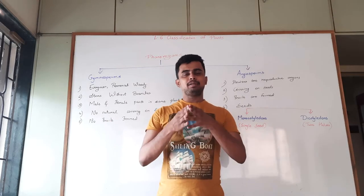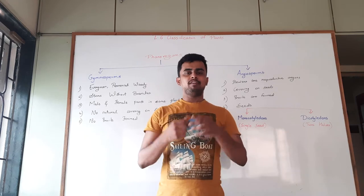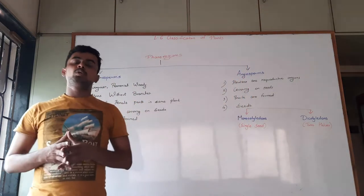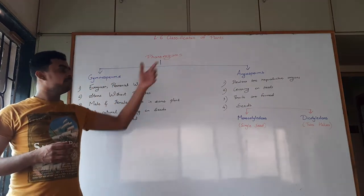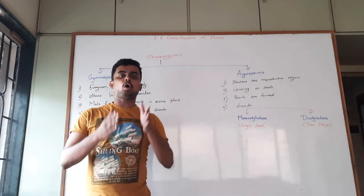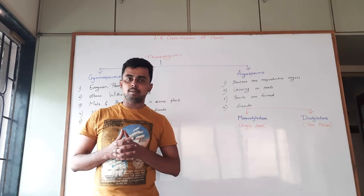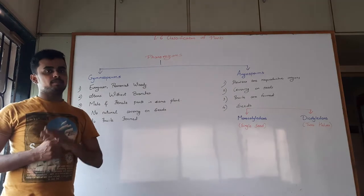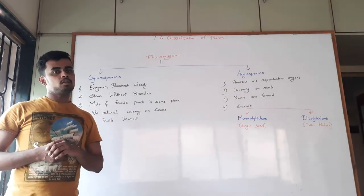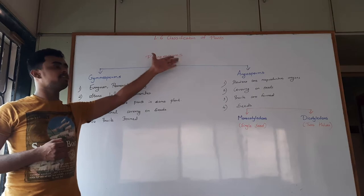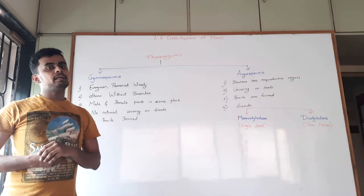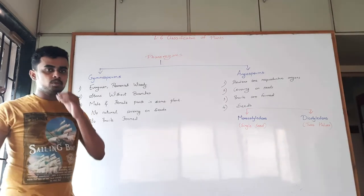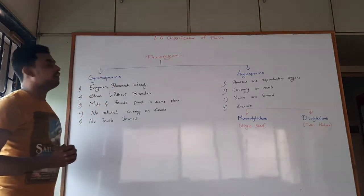Hello everyone, welcome back to Science and Language Hero. Today we will be completing the chapter 'Classification of Plants.' This is the second part of the chapter, where we will see the classification of the second category of kingdom Plantae, that is phanerogams. In the previous video we saw the classification of cryptogames, and today we will be seeing the classification of phanerogams.